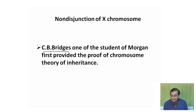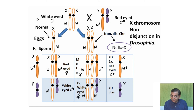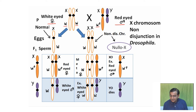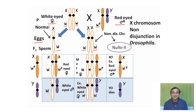In that experiment, Bridges crossed a white-eyed female (homozygous, X^W X^W) with a red-eyed male (X^W+ Y). Due to non-disjunction, the white-eyed female produced three types of eggs: a normal X^W egg, an egg with two X chromosomes (X^W X^W), called a diplo-X egg, and a nullo-X egg with no X chromosome. The sperms from the male were normal: X and Y.